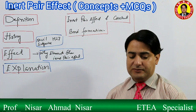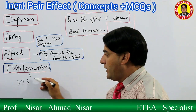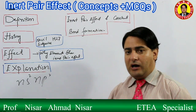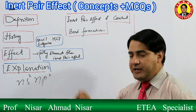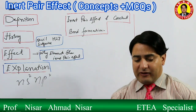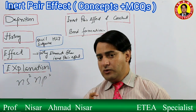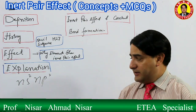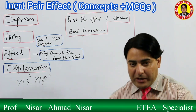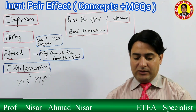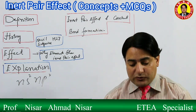Since we are discussing the Inert Pair Effect in respect of Group 4 elements, let us talk about them. The outer shell electronic configuration of Group 4 elements is ns2 np2. Group 4 elements have four electrons in their valence shell. If all four electrons participate in bond formation, the bond formed will be covalent and the element will show a +4 oxidation state.